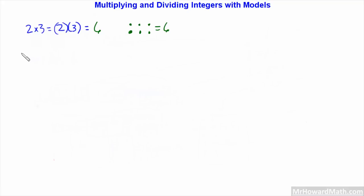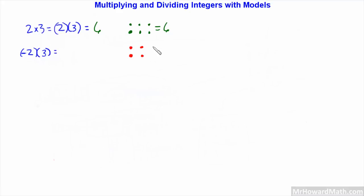Now let's do negative 2 times positive 3. When we're modeling this, we need to start with 2 negatives — red circles. We need 3 groups of those negative 2s. The total is negative 6, because they are all red.